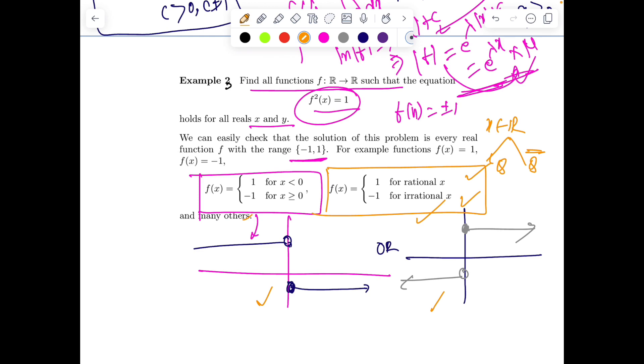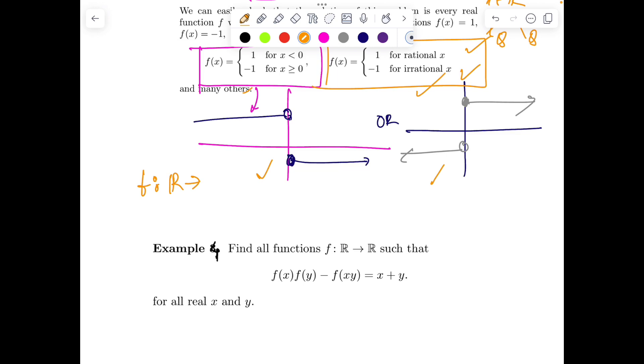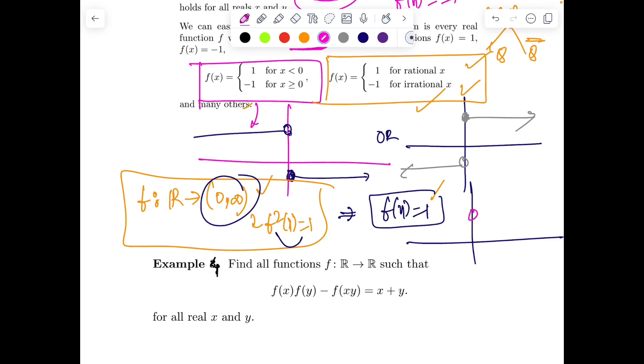Because any real number will be categorized as either rational or irrational. So the solution here is not unique. Be alert for this kind of small trap. Of course, if I change the codomain from ℝ to (0,∞), then only f(x) = 1 will be the solution, because the output should be positive and 0 is not included.